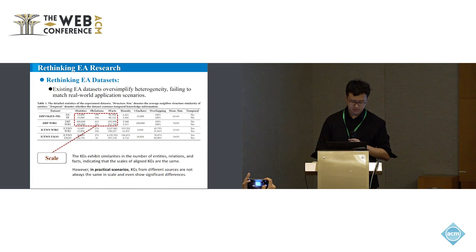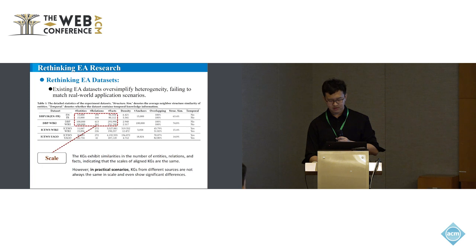So starting with rethinking existing EA datasets, current datasets often overlook the high heterogeneity between knowledge graphs. For scale, the statistical analysis of bilingual DBP and DBP Wiki shows that the KGs are similar in the number of entities, relations, and facts, indicating that the scale of aligned entities are the same.